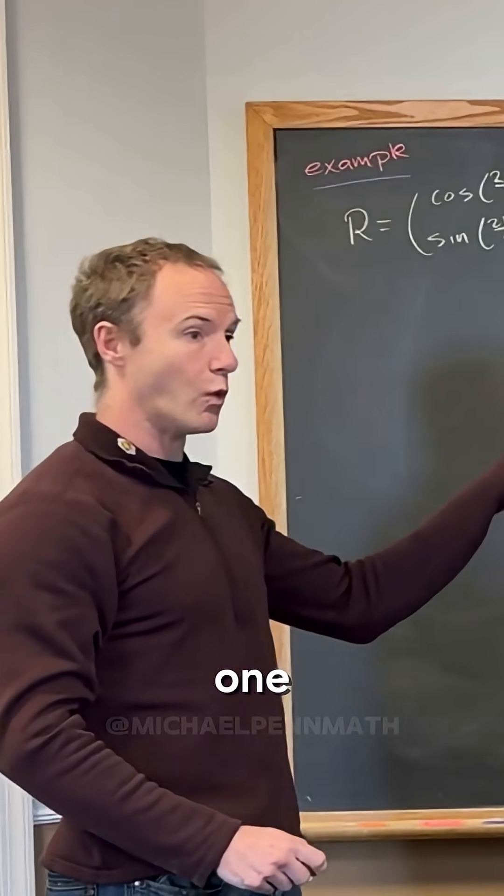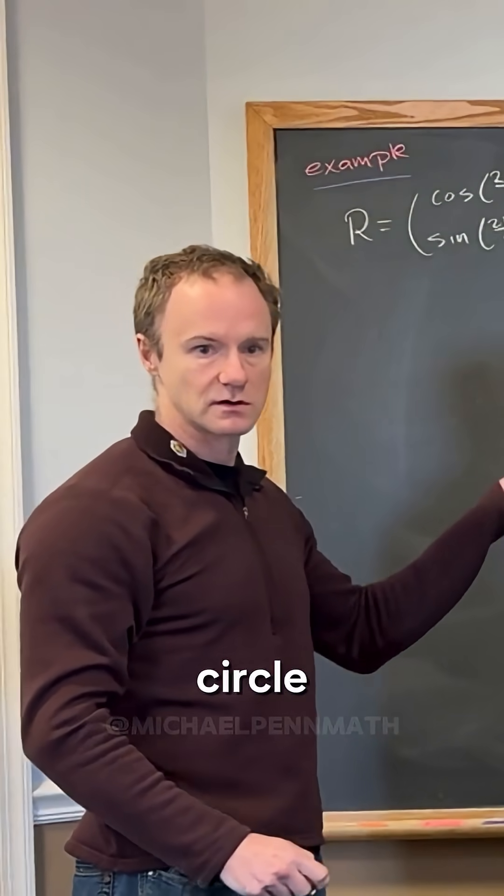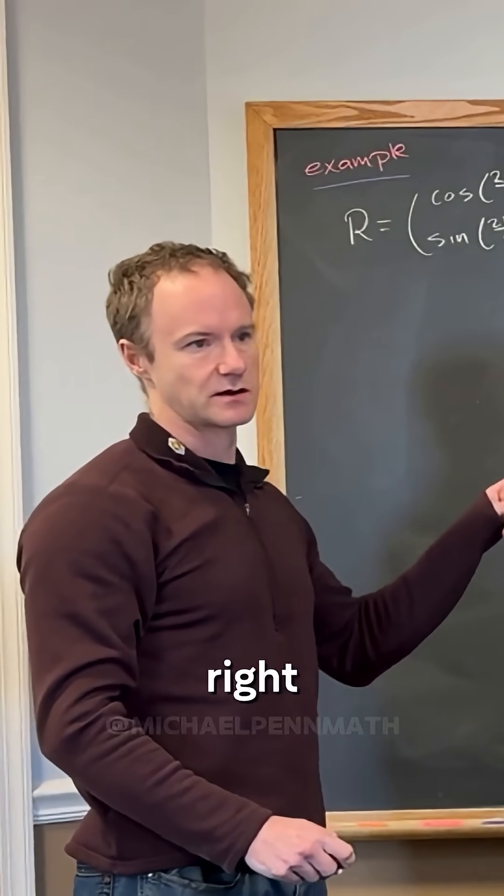So this is rotation by 1 nth of a circle, right? 1 over n of a circle, because 2π is a whole circle.